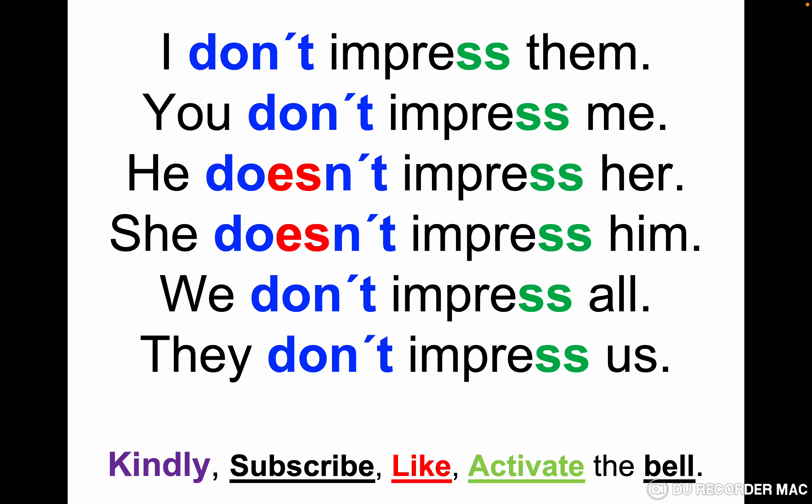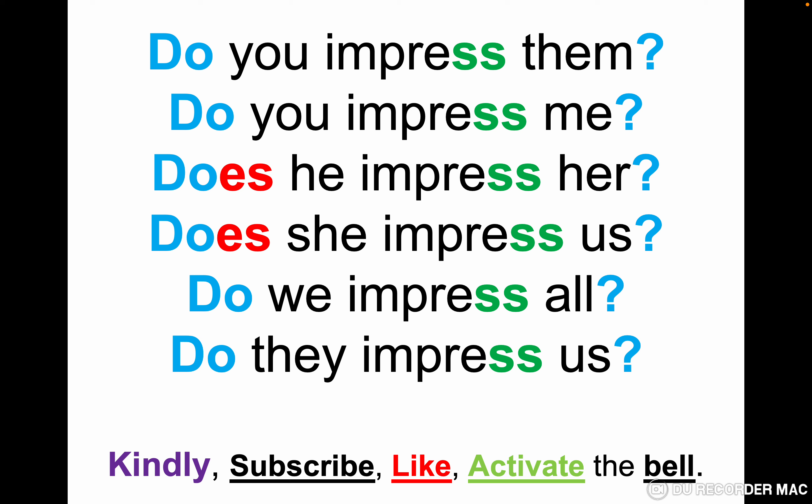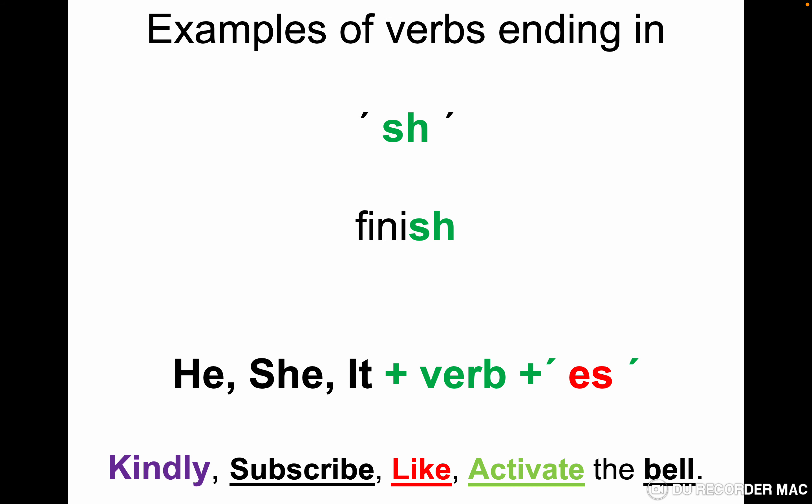Negative form: I don't impress them, you don't impress me, he doesn't impress her, she doesn't impress him, we don't impress all, they don't impress us. The verb doesn't change in the negative form, but we put 'doesn't' with he and she. Question form: do you impress them? Does he impress her? Does she impress us? Do we impress all? Do they impress us? Remember: when we have 'does' or 'doesn't,' the verb doesn't take 'es.'